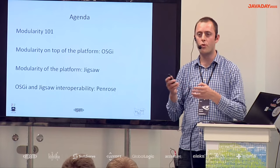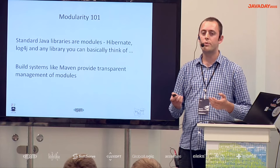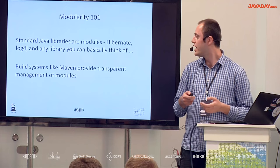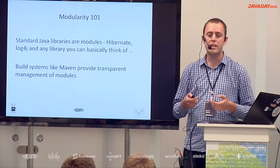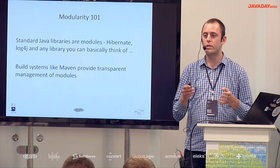So, modularity — what shall we understand when we talk about it? You can consider that each Java library you use, whether that's Hibernate or Java utility logging and so on, is a module on its own. You have build systems like Maven that allow you to manage these modules. Typically, when you develop a Java application, you put all of these libraries or modules in your class path. This is the standard way we develop Java applications.